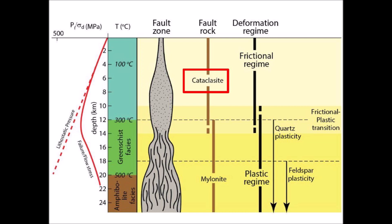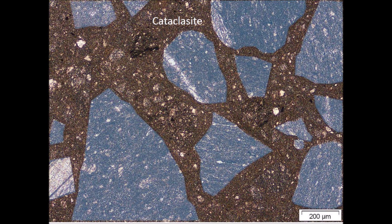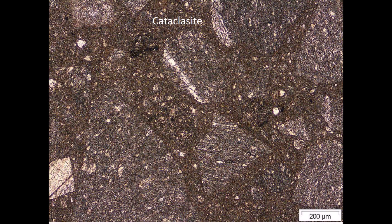Cataclasite is given as an example of the rocks formed under the frictional regime. Cataclasites are composed of large fragments of the pre-existing rock in a matrix consisting of crushed microfragments that cohesively hold the rock together. Notice that this image has been greatly magnified. The scale bar shows 200 micrometers, or two hundred millionths of a meter. The whole image corresponds to a portion of rock measuring about two millimeters, which is about half the size of a grain of rice.